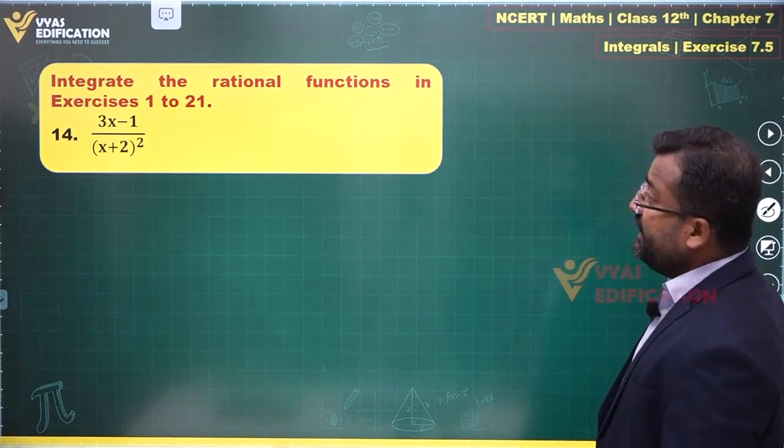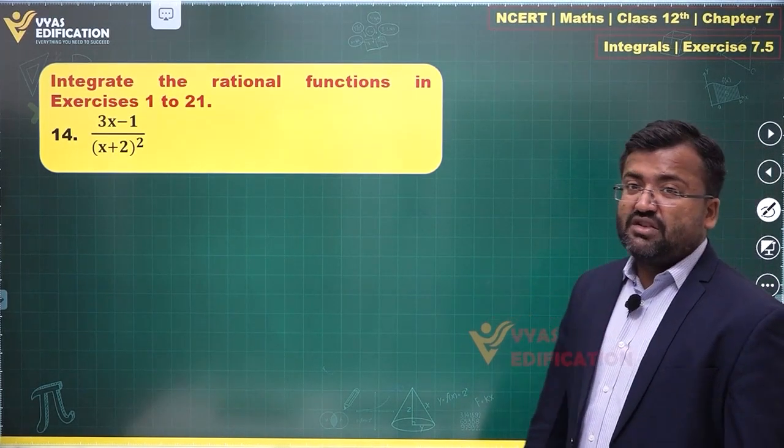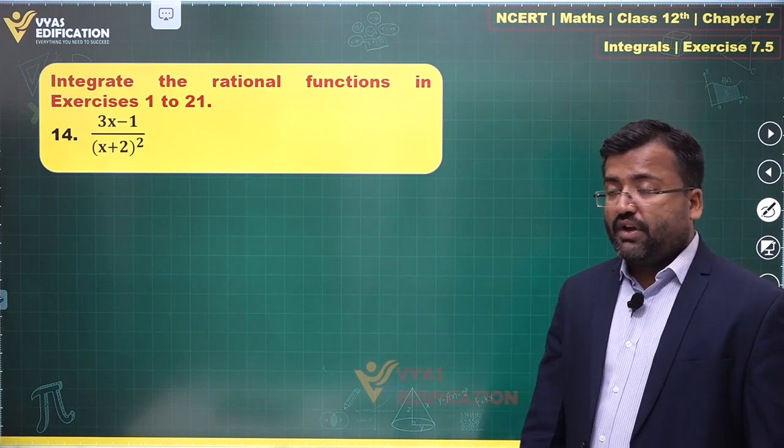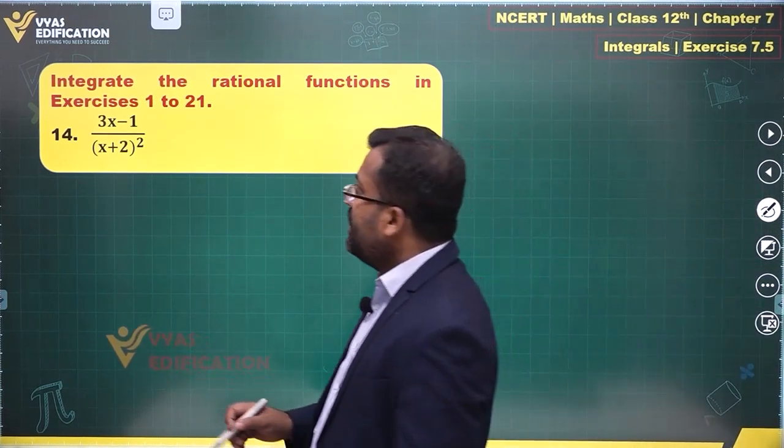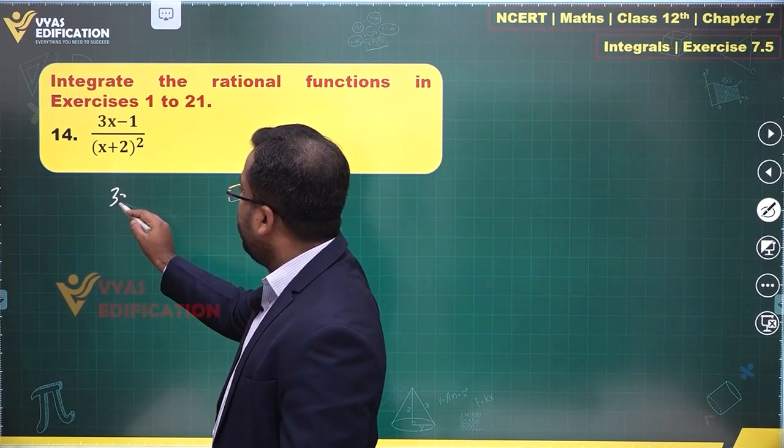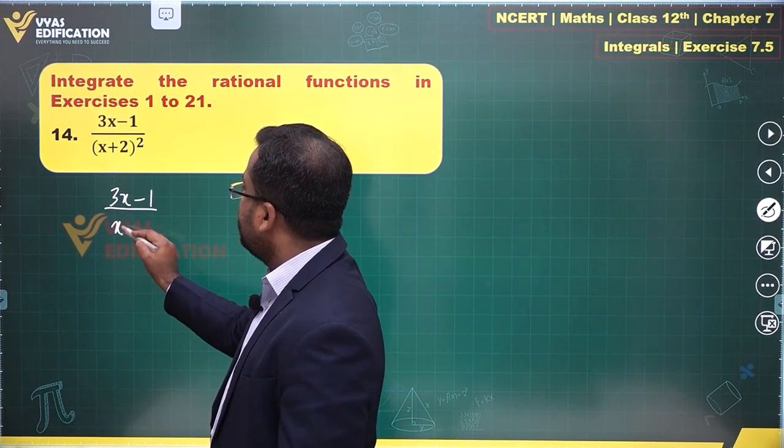In the 14th question we have 3x minus 1 upon x plus 2, then x minus 1 upon x plus 2 whole square. How do we integrate this? Integration will not be difficult. This 3x minus 1 upon x plus 2 square can be simplified with the help of conversion into partial fractions.